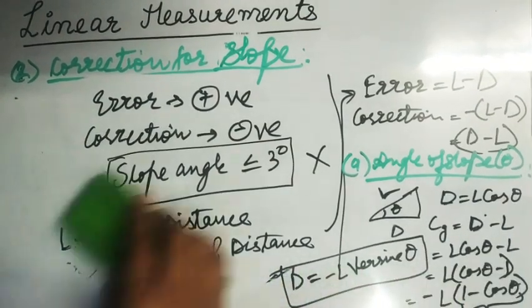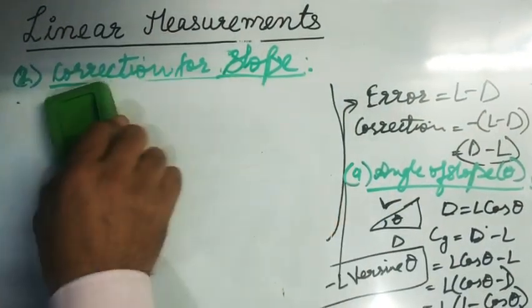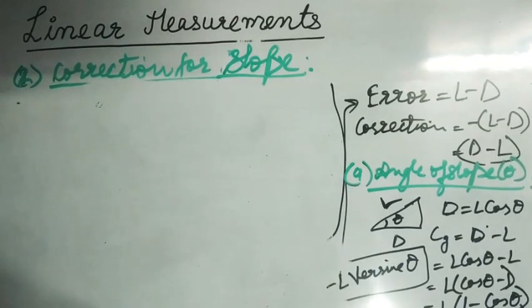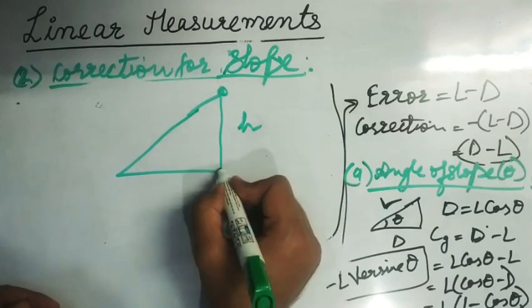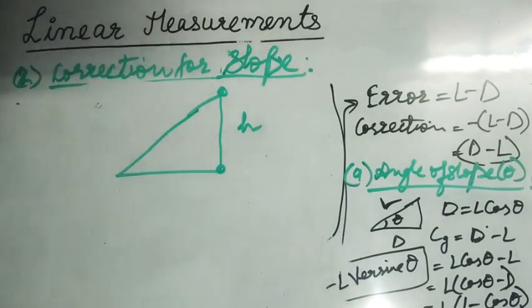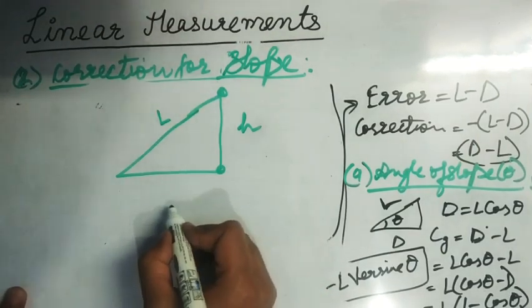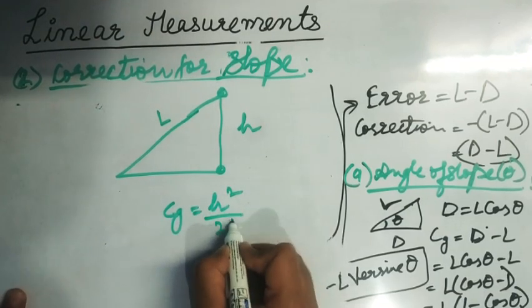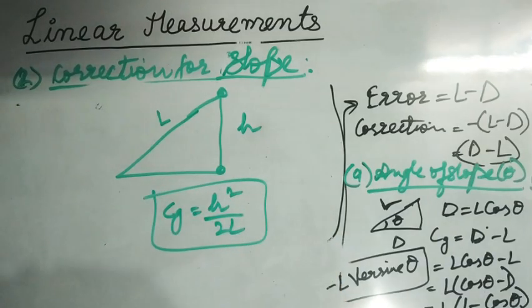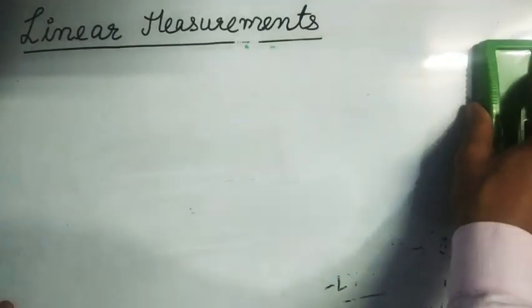The second condition is when the difference of elevations is measured. If H is the difference of elevations and L is the slope length, then the correction can be written as H²/(2L). We will now solve some numericals based on correction for standardization and correction for slope.